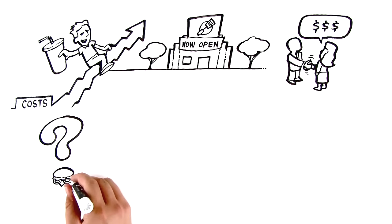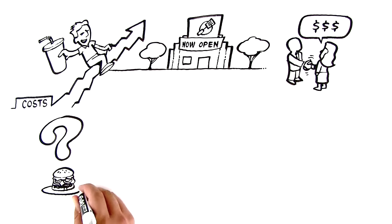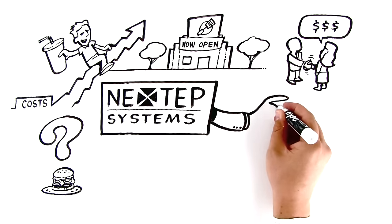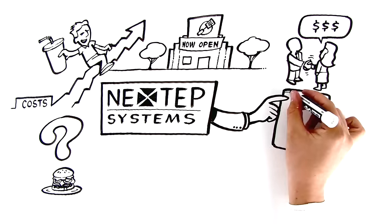So how can you grow your own fast casual concept business like Steve? At Next Step Systems, we've been the leader in touchscreen self-order technology for more than a decade.